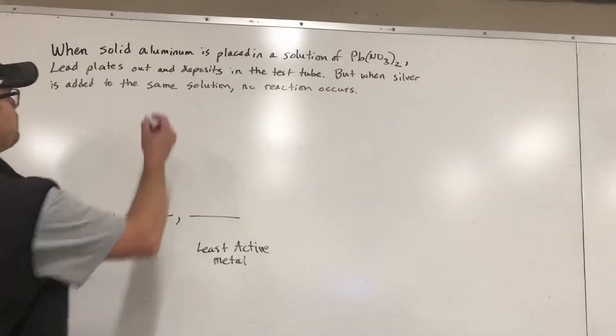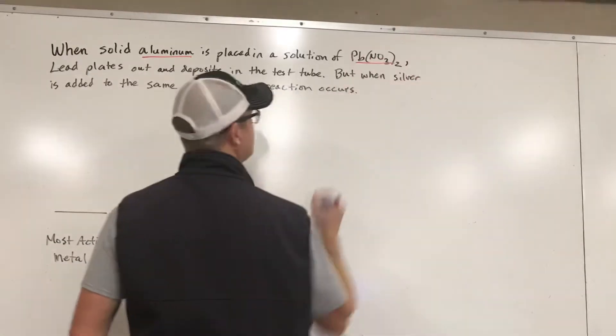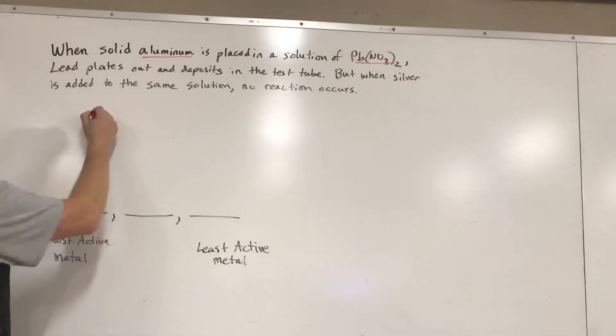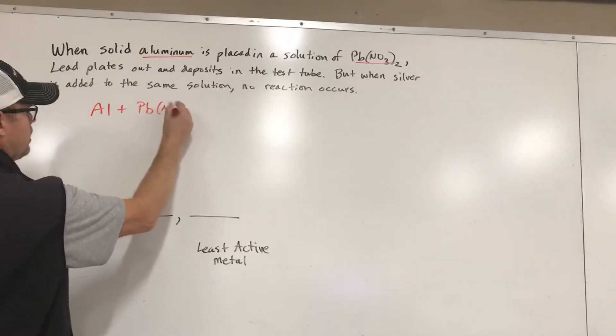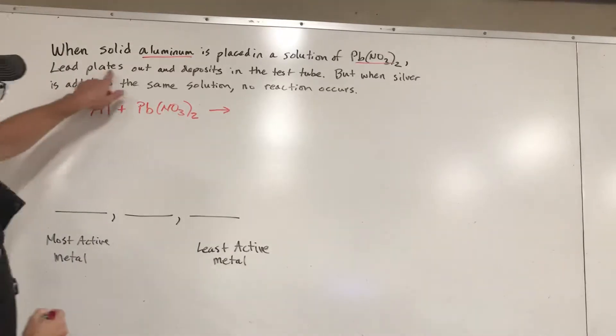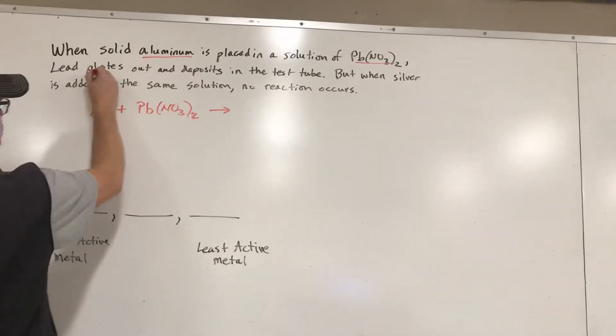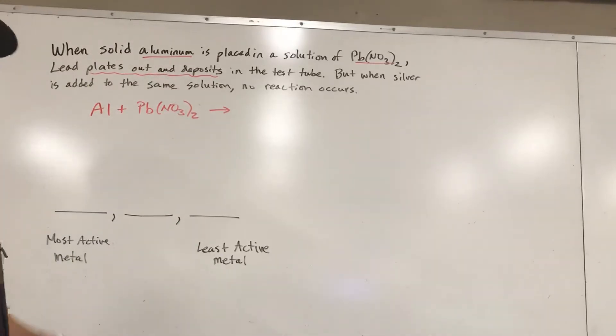These are all single displacement reactions, aluminum and lead nitrate. So I'm going to write aluminum plus Pb(NO3)2. And when this says lead plates out and deposits, we've got to know what that means.